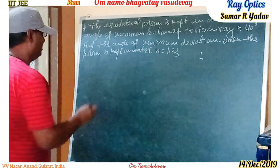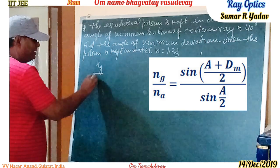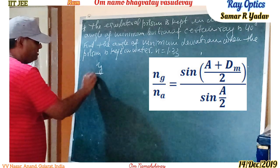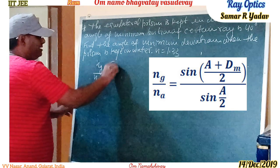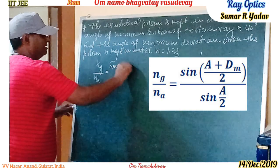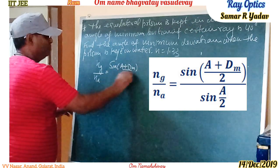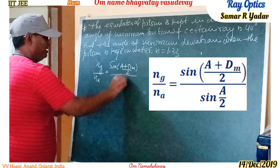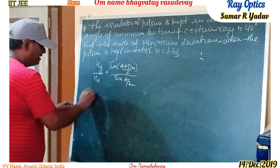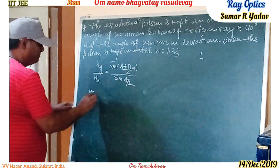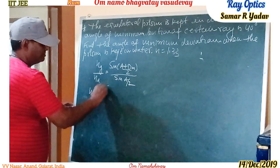So we know the formula here: the refractive index of glass with respect to air is equal to sin((A + δm) / 2) upon sin(A / 2). We have to find μ_g, and the refractive index of air is 1, so we can write the sine expression.